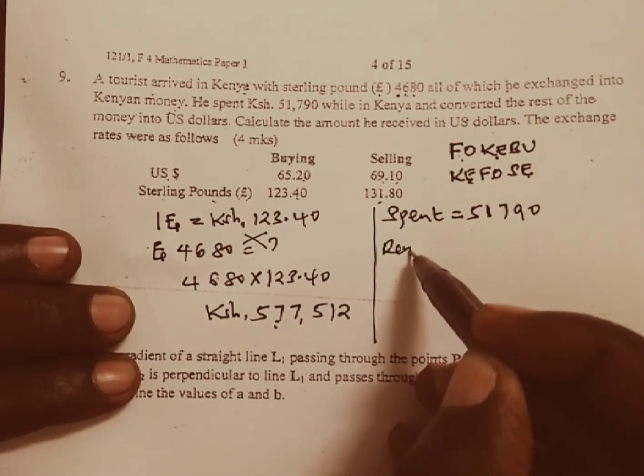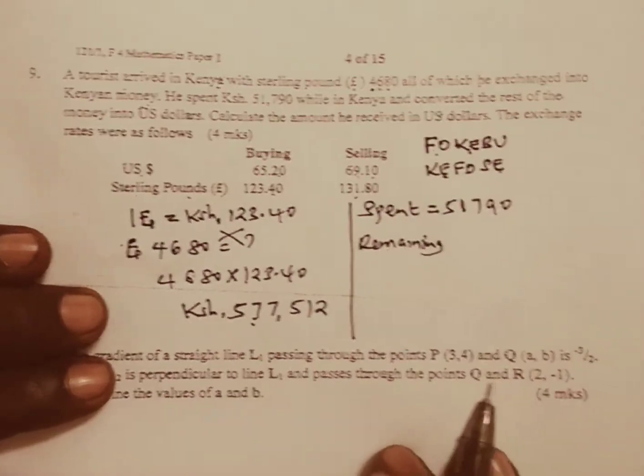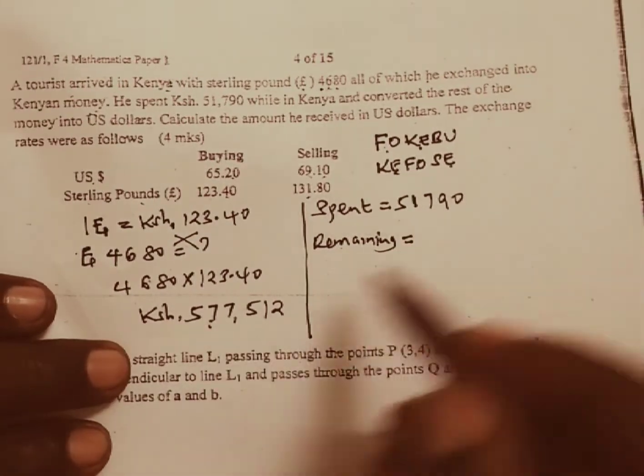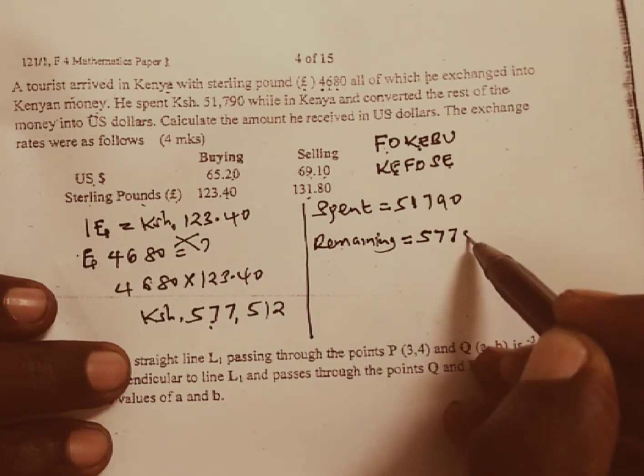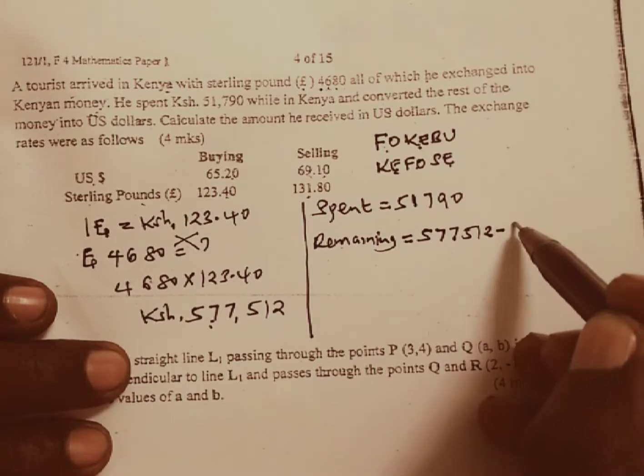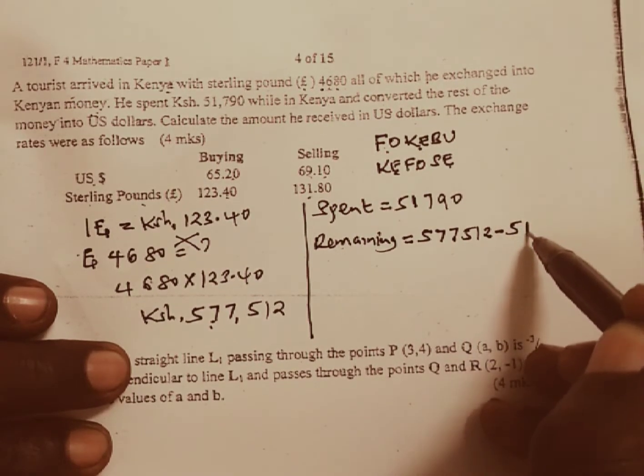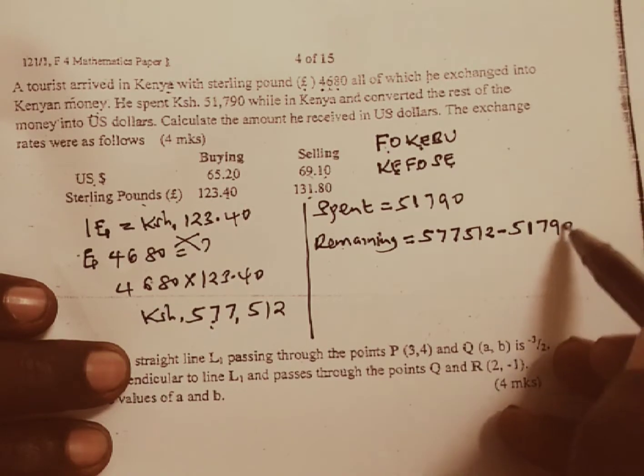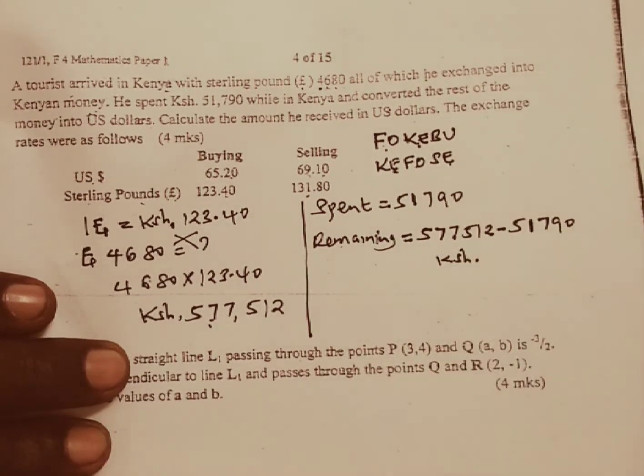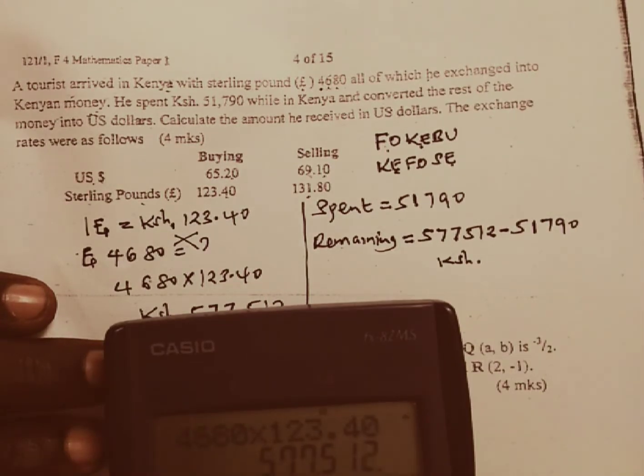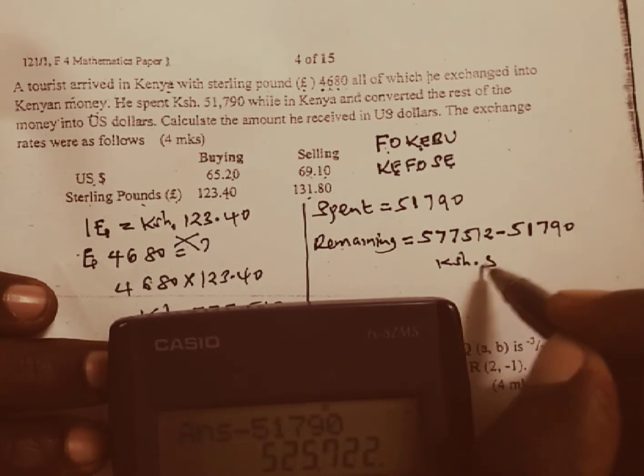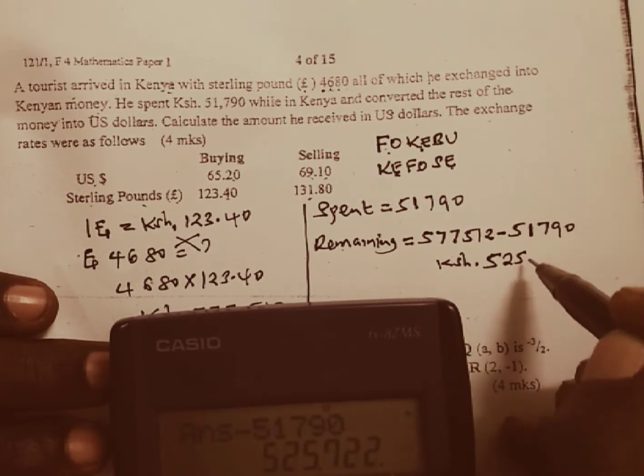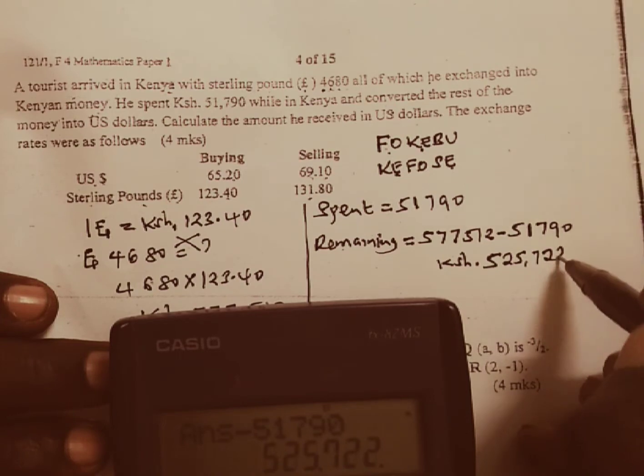Let us get the remaining amount. For us to get the remaining amount, we are going to take the total amount of money received in Kenya shillings, 577,512, we minus what this person has spent which is 51,790. This one is going to be equal to how much? We take 577,512 minus 51,790 and this one here is going to give us 525,722 Kenyan shillings.